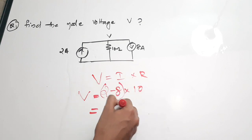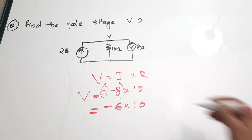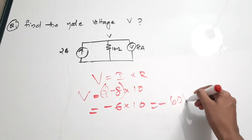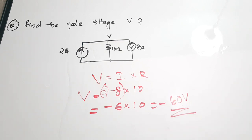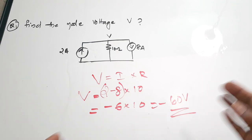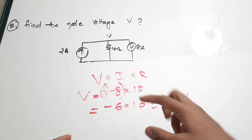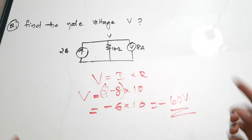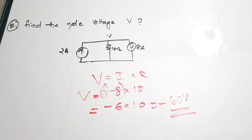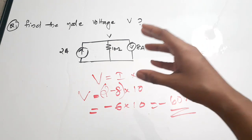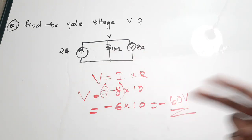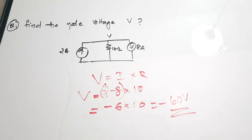So the total current is 2 minus 8, which is minus 6, giving v = minus 6 × 10 = minus 60 volts. If the question has only one node, you can apply this trick very easily using Ohm's Law — just find voltage given current and resistance. Now we move on to a more complicated question.